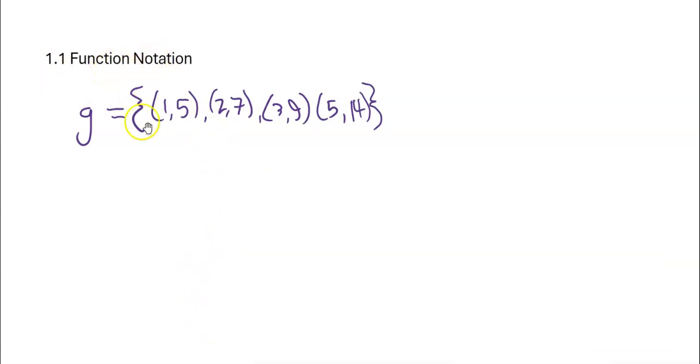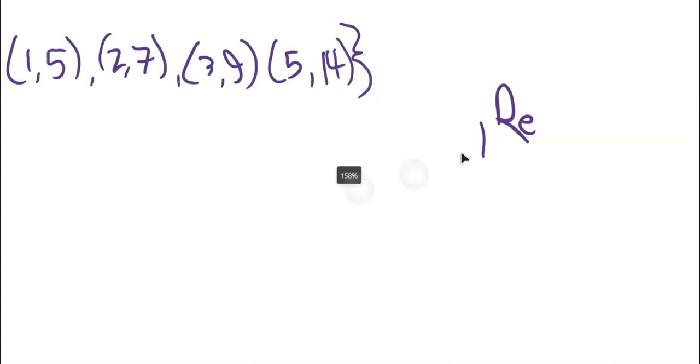As we talk about function notation, we'll start by thinking about what's called a relation. So a relation, or sometimes maybe a relationship, but a relation is essentially just a set of ordered pairs.